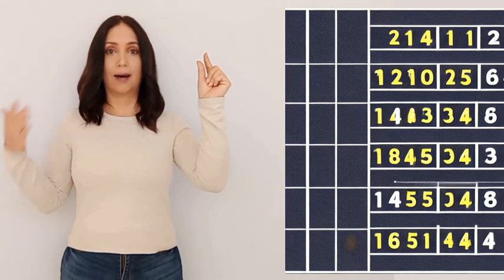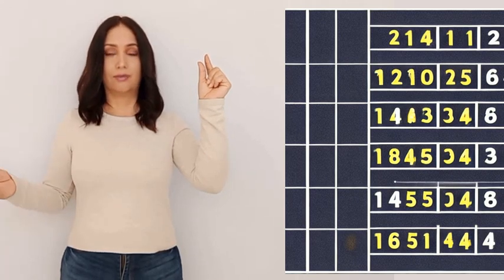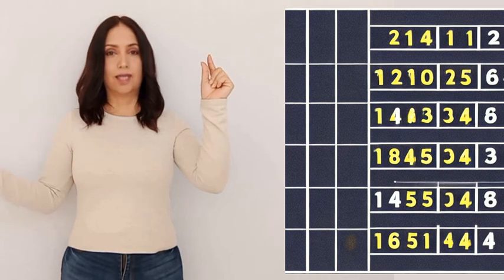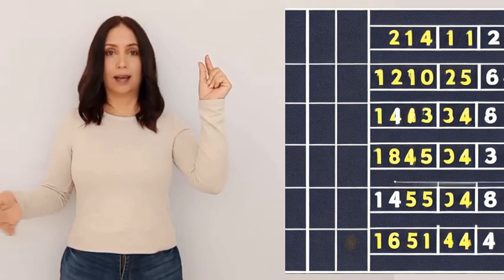The fundamental sequence of omega omega is also a sequence of numbers, but it grows even faster than the fundamental sequence of epsilon zero. It helps us understand how big omega omega is. Similarly, each number in the sequence is created by repeating a certain number many times.